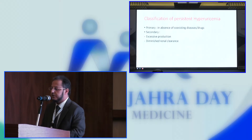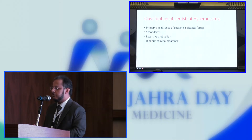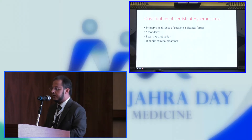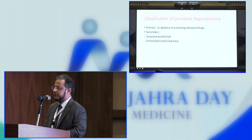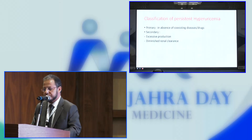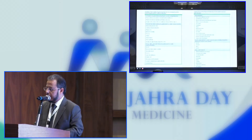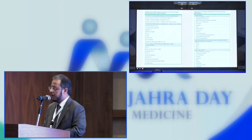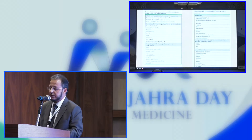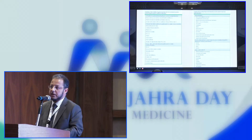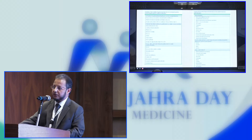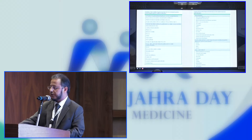Regarding the classification of persistent hyperuricemia, there is primary hyperuricemia, which occurs in the absence of coexisting diseases and drugs, and there is secondary hyperuricemia due to either excessive production or diminished renal clearance. There is a huge list of causes, among them genetics, some medical problems, and drugs that contribute to both categories.